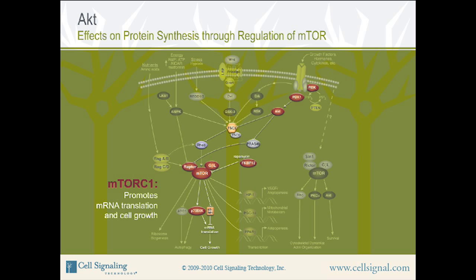The second mTOR complex, mTORC2, consists of mTOR, RICTOR, GβL, and SIN1, and is insensitive to rapamycin. This complex functions upstream of AKT, providing the critical second phosphorylation of AKT at serine-473, which is necessary for AKT activation.